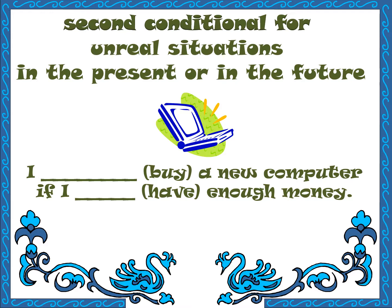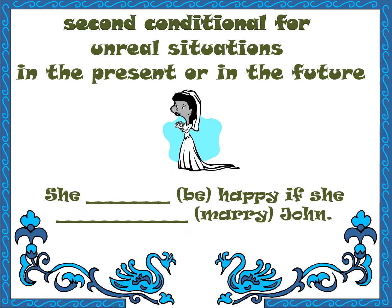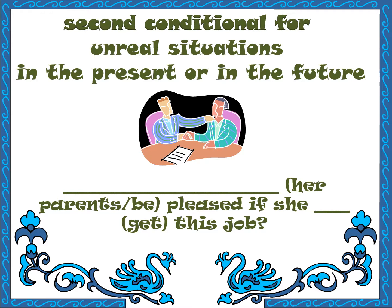Another example: 'I would buy a new computer if I had enough money.' Notice here — if the 'if' clause comes second, it still follows past simple. So: I would — I'd — buy a new computer if I had enough money. Next: 'She would be happy if she married Joan.' Excellent! If she married Joan.